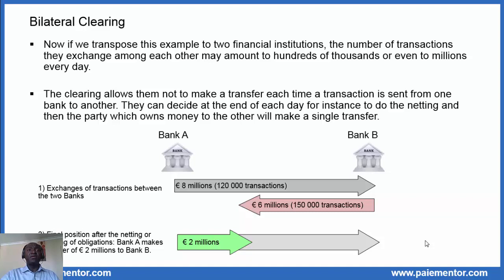As we can see in the diagram, Bank A and Bank B first exchange a very high number of transactions among them, and then a netting or offsetting of obligations is performed. Only after that do they know what the final position is, and then Bank A makes a single transfer of two million euros to Bank B to settle all the transactions. This example clearly shows how efficient bilateral clearing can be.